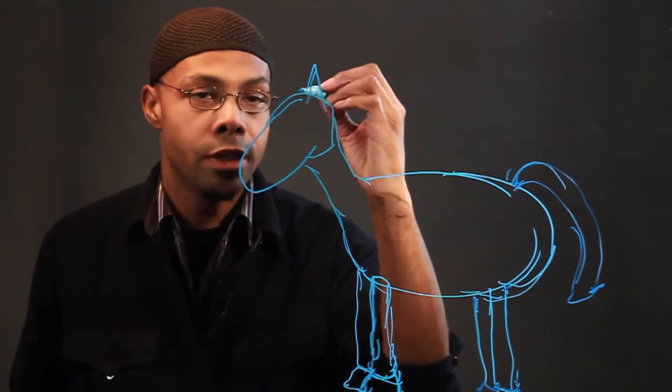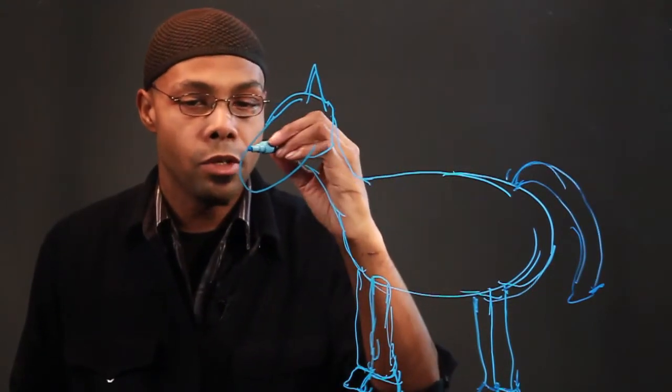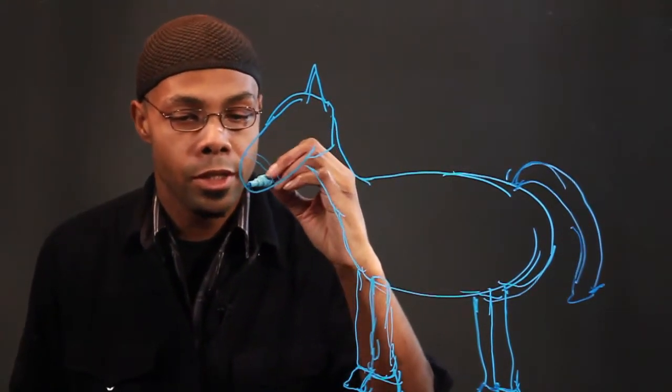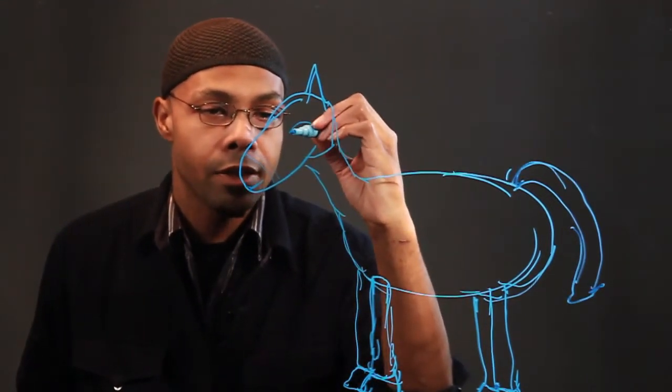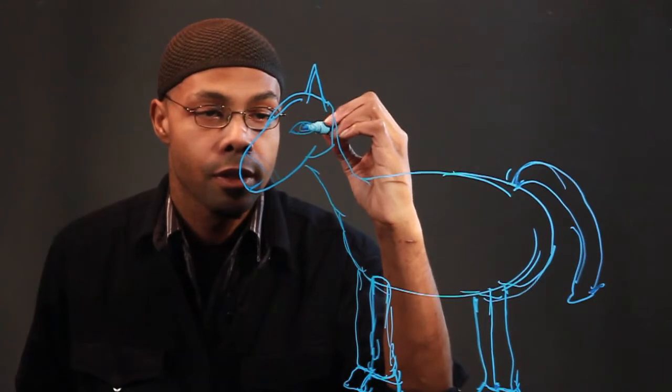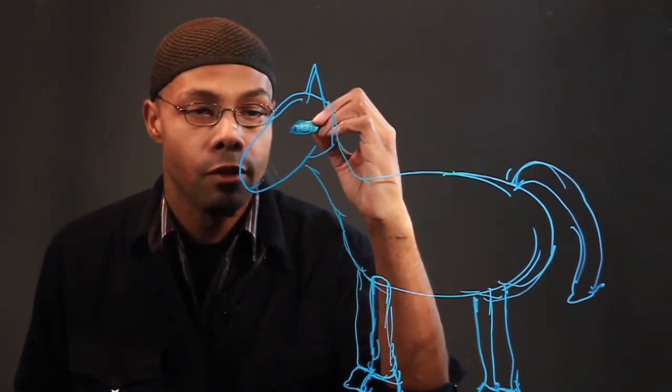And you want to draw other details like finishing up the head. Near the front, you want to draw the mouth. You want to do the eyes. Or the eye in this case, since it's from the side.